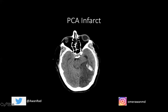A PCA infarct involves the posterior cerebral artery territory — here in the occipital lobe, we have hypoattenuation, complete effacement of the sulci, gyral swelling, and lack of gray-white matter differentiation. We also have some hemorrhage here, making this a hemorrhagic infarct — the bright hyperdense material represents blood products. A PCA infarct presents mainly with visual symptoms: contralateral homonymous hemianopia with macular sparing, visual hallucinations, agnosia (inability to interpret sensation and recognize things), inability to read (though the patient can still write), and possibly cranial nerve palsies.